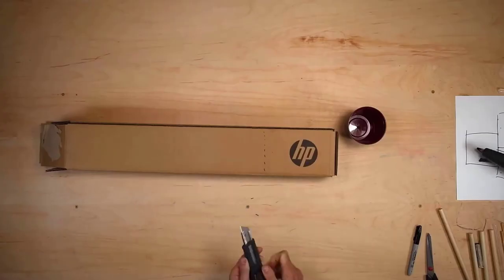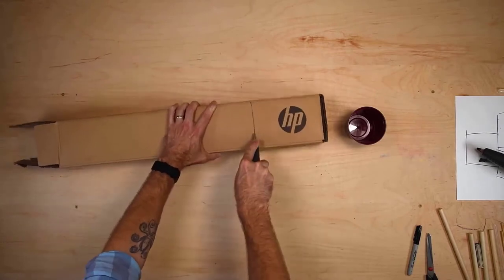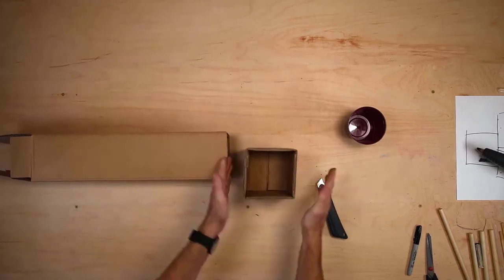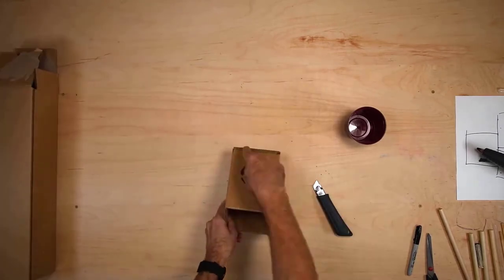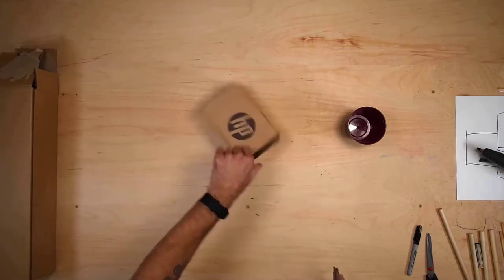So the first thing you need to do is find your box and then cut it about the size of a regular square tissue box, something like that, and then cut out one side because we're going to be working inside the box and this will make it a lot easier to do.